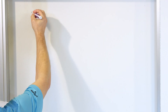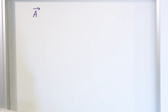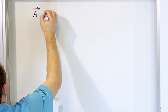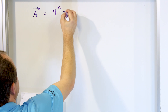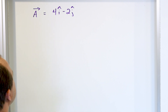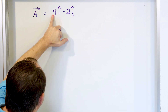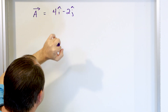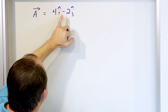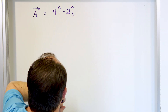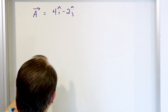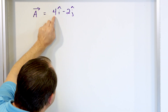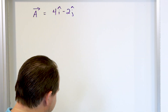We'll start out by writing what we are given. Vector A — and don't forget to put that vector arrow on top, reminding you it's a vector — is equal to 4 in the i direction minus 2 in the j direction. The i hat goes with the x direction, so this is the x component, and this is the y component — a negative y component. So A sub x is 4 and A sub y is negative 2.